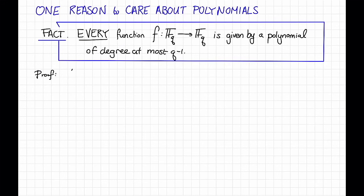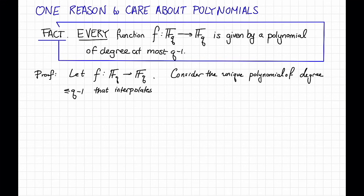Here's a proof. Suppose that F is some function from f_q to f_q. Now consider the unique polynomial of degree at most q-1 that interpolates through all the points in f_q. Such a polynomial exists by the theorem that we saw in the previous slide. But now this polynomial is exactly the polynomial we're looking for. It agrees with F on every single point in the field, and it has degree at most q-1.